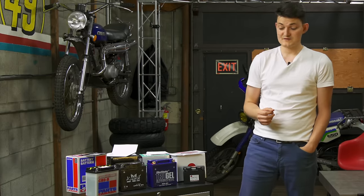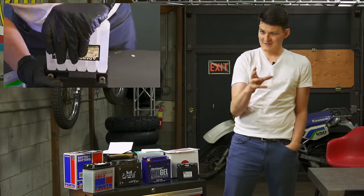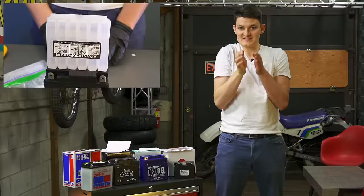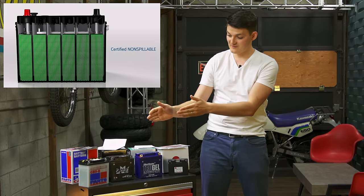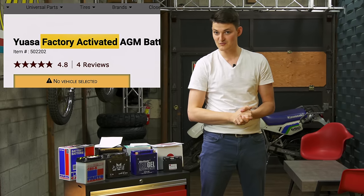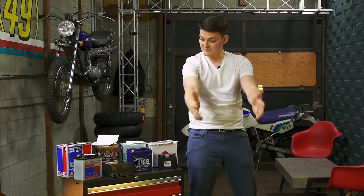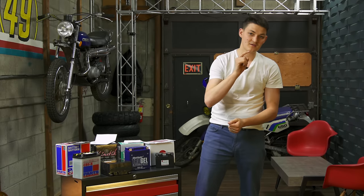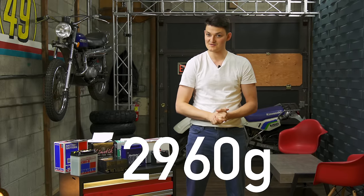For $15 more I get an AGM battery. Same principle except the acid is absorbed in spongy fiberglass sheets between electrodes, so I can ship this with the acid already sealed inside and that doesn't make me a mail bomber. I can also crash without spilling sulfuric acid onto my crotch. Thank you very much, absorbent glass mat. 2,960 grams.